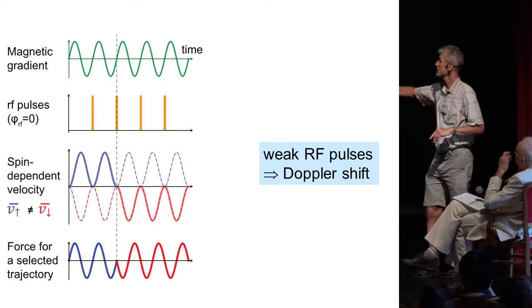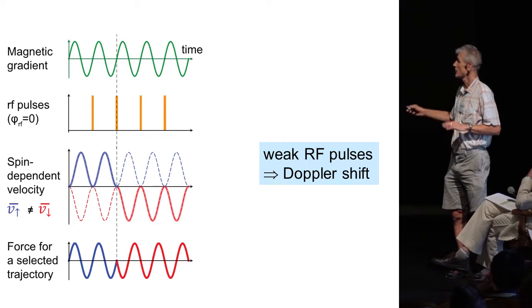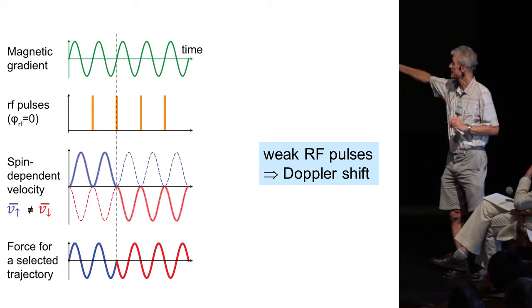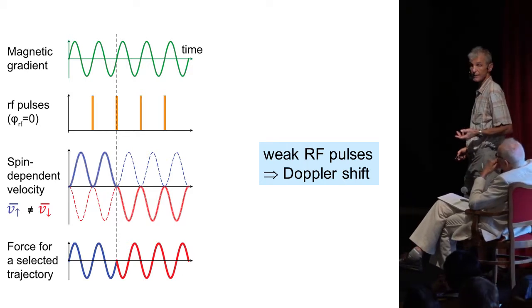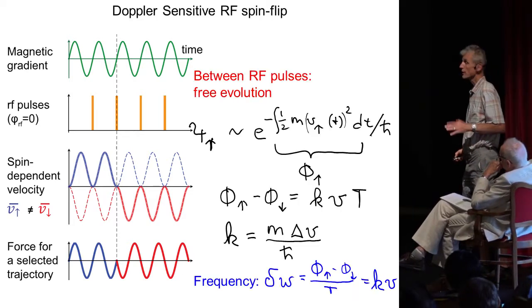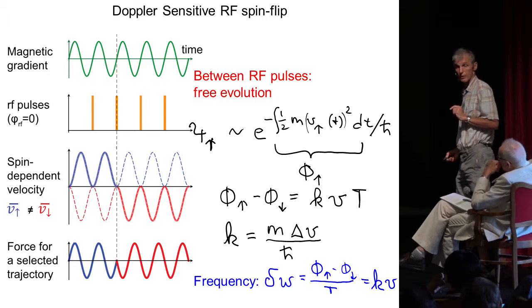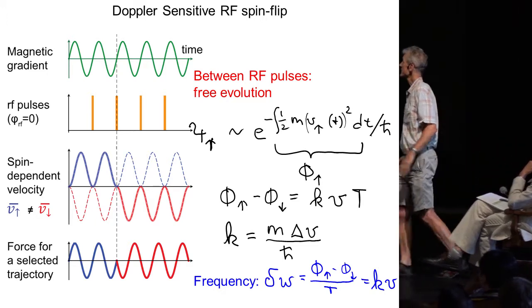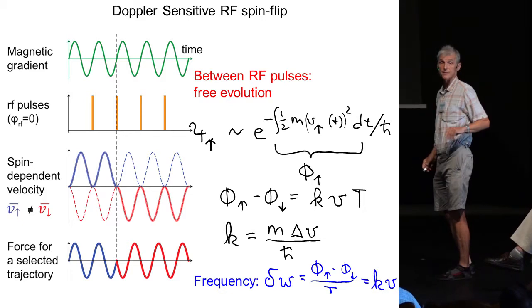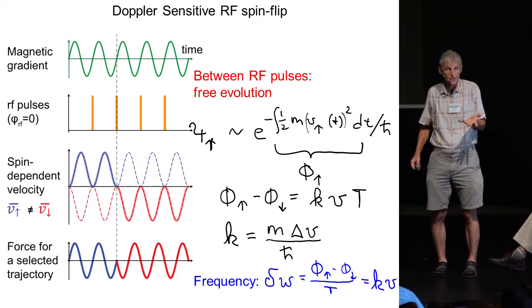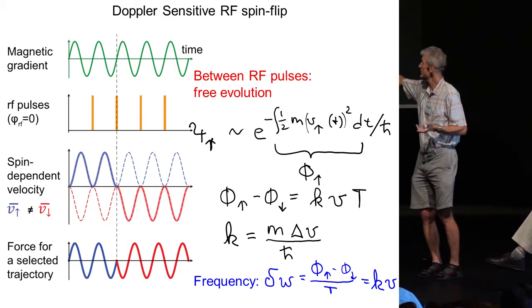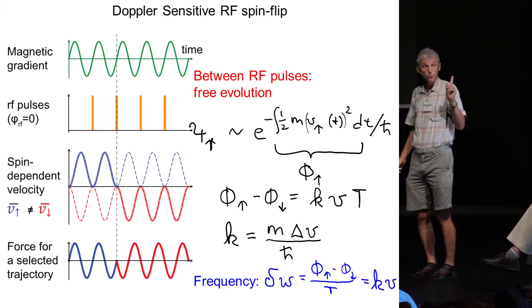However, for the situation I introduced to you with many weak pulses synchronized with the oscillating magnetic field gradient, as I want to show you now, there is indeed a Doppler shift. The correct way to look at this situation is, if you have many pulses you should look at it as a multi-pulse Ramsey sequence. And you should ask what is the phase evolution between the two pulses.